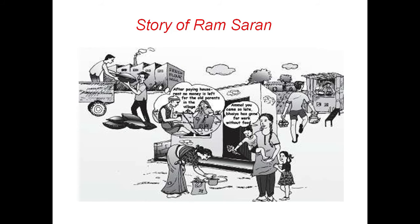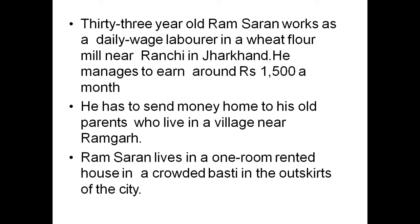To understand the concept of poverty and where we will find these poor people, let us consider the situation of Ramsaran through a story. In the picture it is shown the family of Ramsaran. A 30-year-old Ramsaran works as a daily wage laborer in a wheat flour mill near Ranchi in Jharkhand. He manages to earn around Rs. 1500 a month. He has to send money home to his old parents who live in a village. Ramsaran lives in a one-room rented house in a crowded basti on the outskirts of the city.